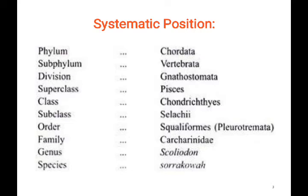Super class is Pisces, and their class is Chondrichthyes, also called Elasmobranchi. Super class Pisces has two classes: Chondrichthyes and Osteichthyes. Chondrichthyes are the cartilaginous species, while Osteichthyes have a bony endoskeleton. The sub-class is Selachi, and the order is Squaliformes.